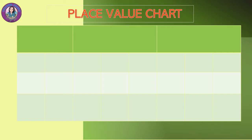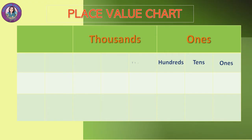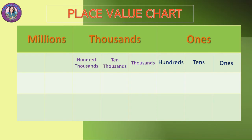Look at this place value chart. We have the ones place, tens place, and hundreds place. Next, we have the thousands place. Then comes the millions period, which includes millions and ten millions.